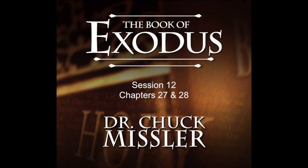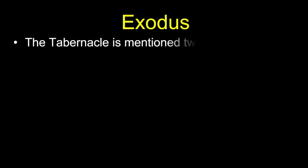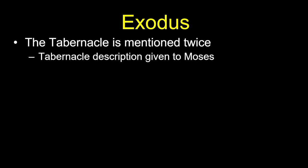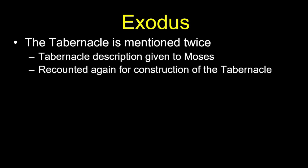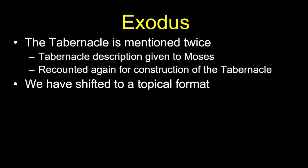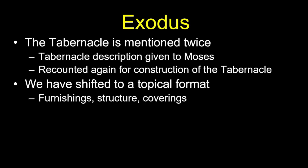Rather than go chapter by chapter at an uncomfortable pace, we'll address the remaining issues topically. The tabernacle is mentioned twice in Exodus — first where Moses is told what to do, then recounted in a different order when they actually construct it. So we've shifted to a topical format, discussing the various furnishings, structure, and coverings, which we discussed last time.